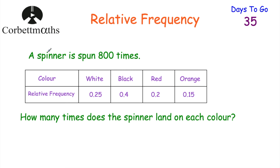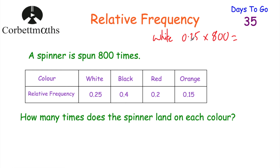Our next question says the spinner has been spun 800 times. The table tells us the relative frequency of four colours: white, black, red, and orange. We want to find out how many times the spinner lands on each colour. To do that, you multiply the number of trials (800) by each relative frequency. For white, we take 0.25 and multiply by 800: 0.25 × 800 = 200. So it landed on white 200 times. We can check: 200/800 = 1/4 = 0.25, which matches the relative frequency.